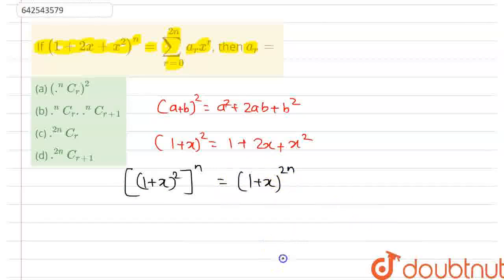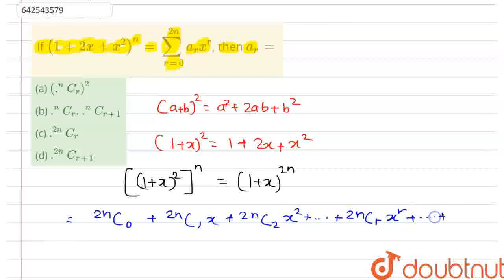And now we can expand it using binomial theorem. So this will be equal to ²ⁿC₀ + ²ⁿC₁x + ²ⁿC₂x² + ... + ²ⁿCᵣxʳ + ... The final term will be ²ⁿC₂ₙx²ⁿ.